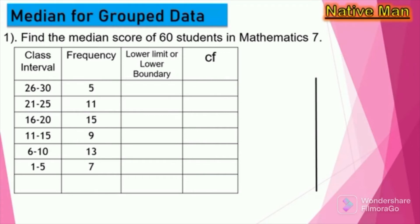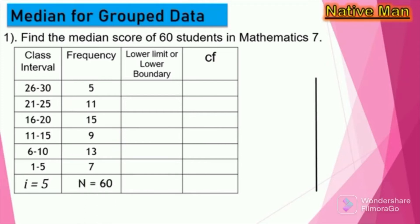Now we fill in the lower limit or lower boundary column and the cumulative frequency column. The size of class interval I = 5, since each class interval contains 5 numbers (e.g., 1 to 5). The total frequency N = 60. For the lower boundary, we find the midpoint between adjacent class intervals: 26–30 has lower boundary 25.5; 21–25 has 20.5; 16–20 has 15.5; 11–15 has 10.5; 6–10 has 5.5; and 1–5 has 0.5.